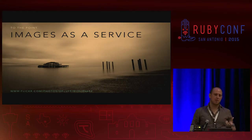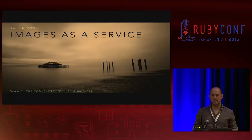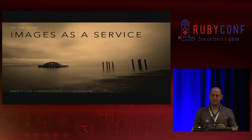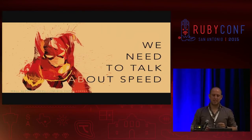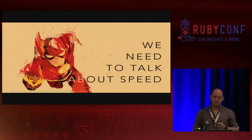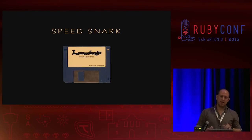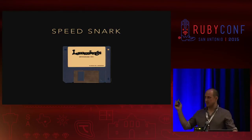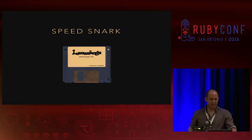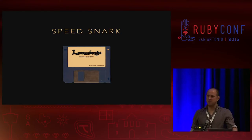So, images as a service. This is something that came up at work. Often websites have images on them, as you're probably aware. But the thing we need to think about is speed. There's a great article — who knows what this is? It's the save icon from Microsoft Office. It used to be a physical object, but you don't see them anymore particularly.